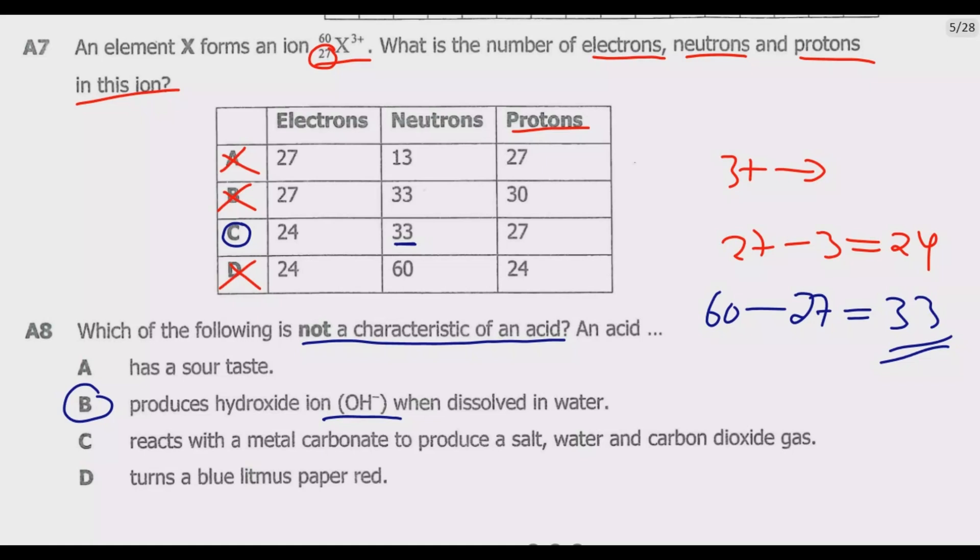When an acid dissolves in water, it produces hydronium ion (H₃O⁺), which is this one. So this is hydronium ion, not hydroxide ion, hence B is the one which is not correct. If you see C, it reacts with a metal carbonate to produce a salt, water, and carbon dioxide gas, which is correct. When you react an acid with a carbonate you get three products: salt, water, and carbon dioxide. D - turns a blue litmus paper red, which is correct. So B is the one which is incorrect.